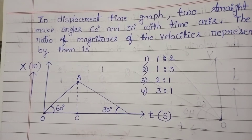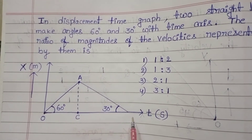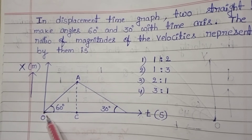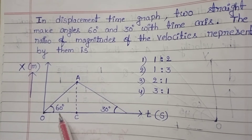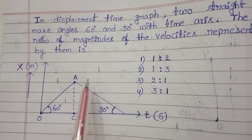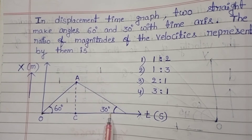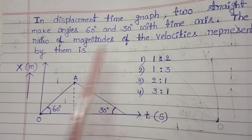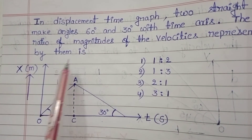Given: the graph is a displacement-time graph with two straight lines. The first straight line OA makes an angle of 60 degrees with the time axis, and the second straight line makes an angle of 30 degrees with the time axis. We want to find the ratio of magnitudes of velocities represented by them.